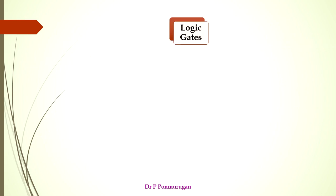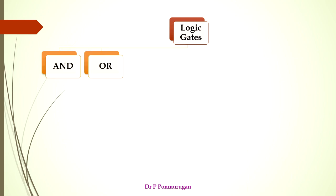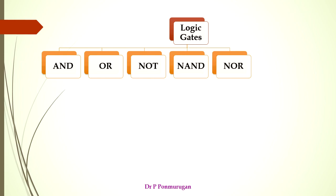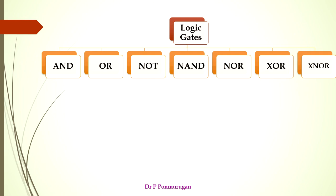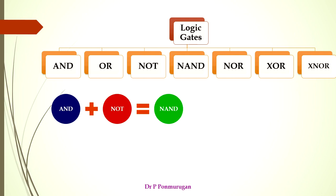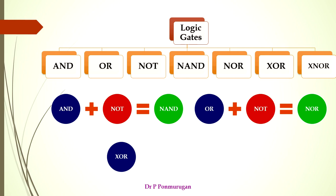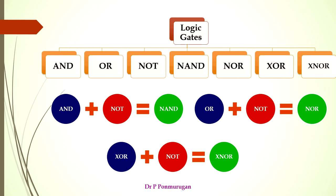Logic gates can be divided into three streams: fundamental logic gates, universal gates, and arithmetic gates. The fundamental or basic logic gates have three gates: AND, OR, and NOT. The universal gates are NAND and NOR gates, and the arithmetic gates are XOR and XNOR gates. NAND, NOR, and XNOR are just opposites of their fundamental gates — the NAND gate is a combination of AND and NOT, the NOR gate is a combination of OR and NOT, and the XNOR gate is a combination of XOR and NOT.